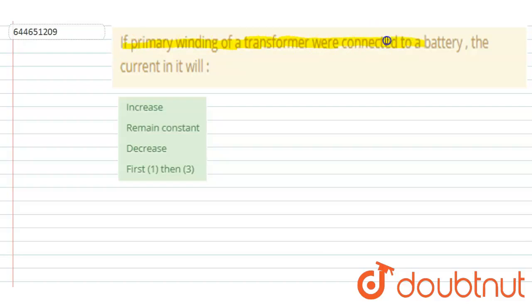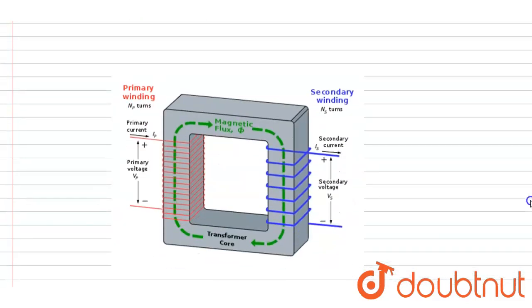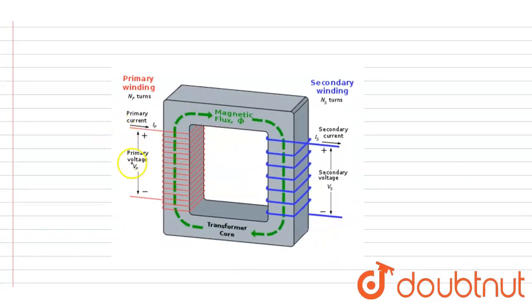a transformer is connected to a battery, the current in it will... So if you see, it is given that it is connected with a battery. If you see the diagram here, this is connected with a battery.